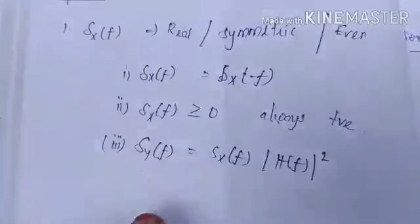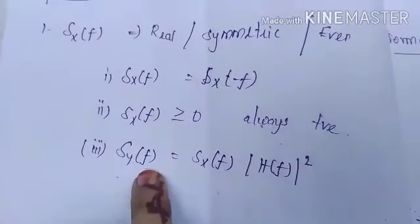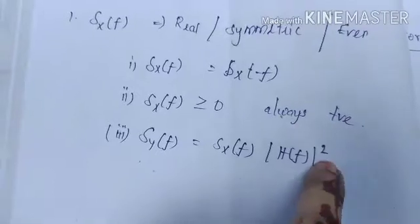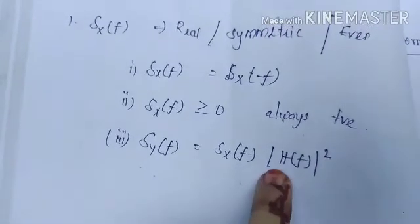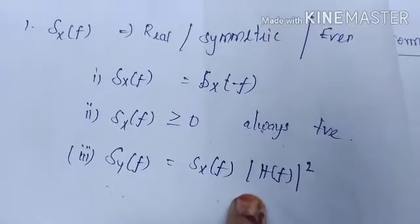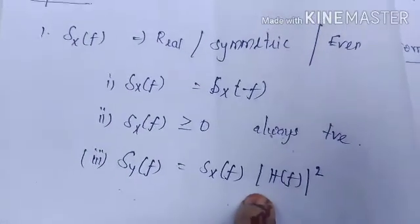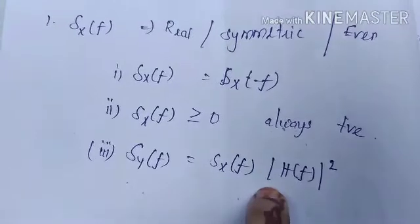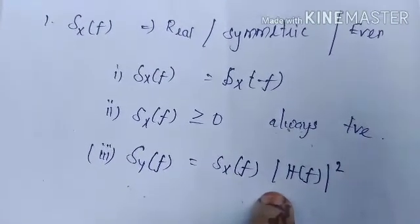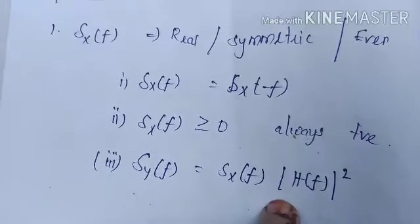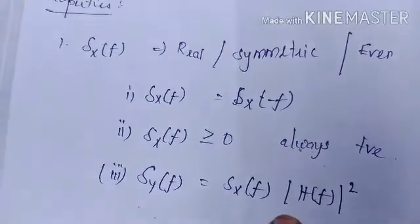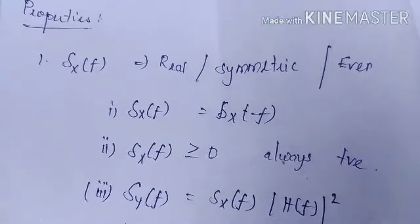Another property: Sy(f) is equal to Sx(f) multiplied by the mod of H(f) squared, where H(f) is the impulse response function. These are the properties of power spectral density. There are many properties, but here I have given only the very important points, including the formulas related to autocorrelation function and three key properties of power spectral density.